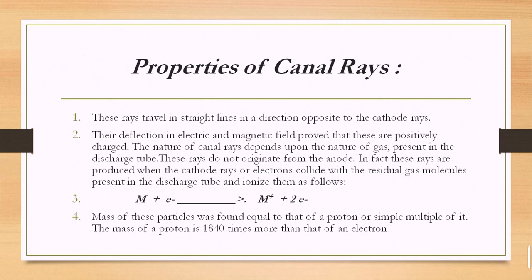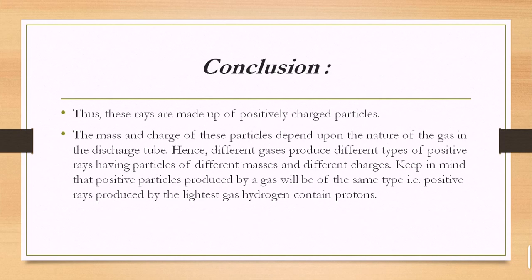Alpha particles are always positively charged ions, and the nature of their production depends on the nature of the gas used in the discharge tube. They get ionized when electrons strike the metal, emitting positive metal ions. The mass of the particle was found equal to that of the proton or a simple multiple of it. These rays are made up of positively charged particles, and different gases produce different types of positive rays with different masses and charges. The particle produced by the lightest gas, hydrogen, gives the fundamental positive ray.